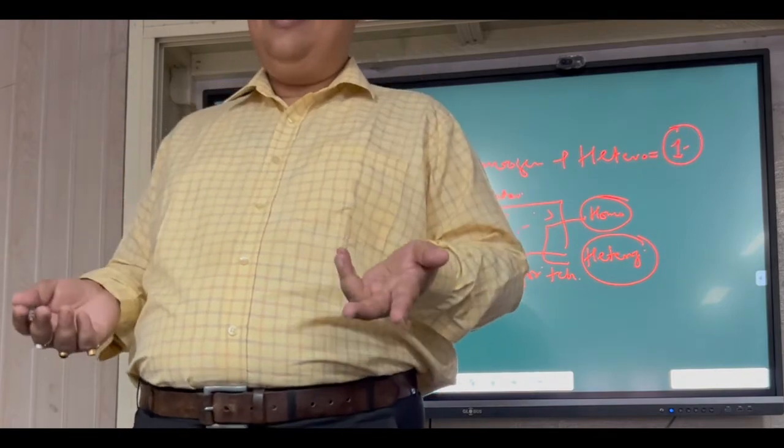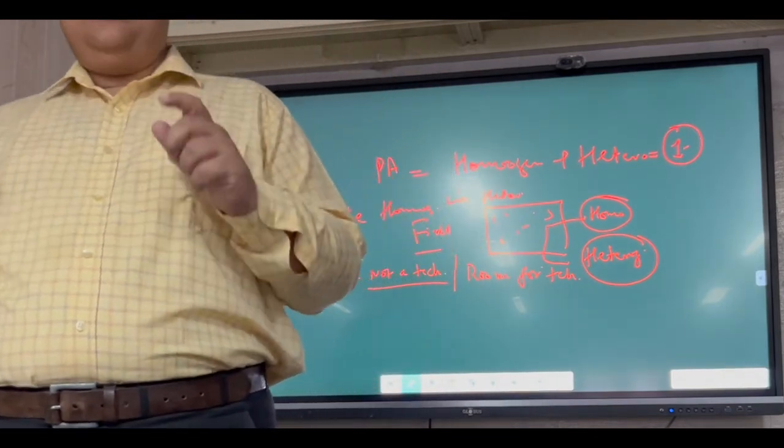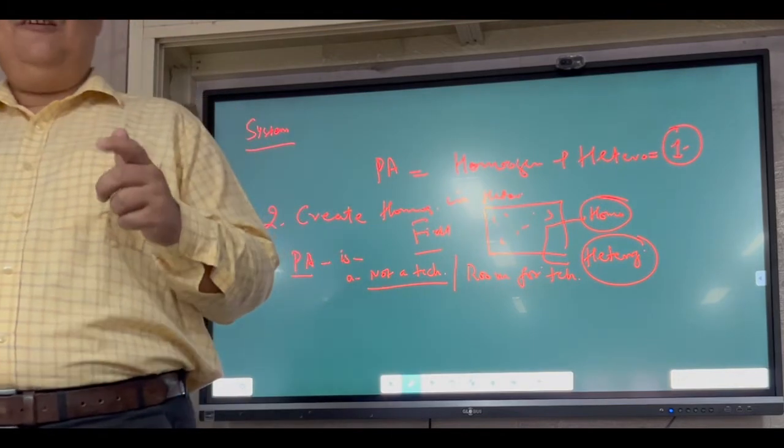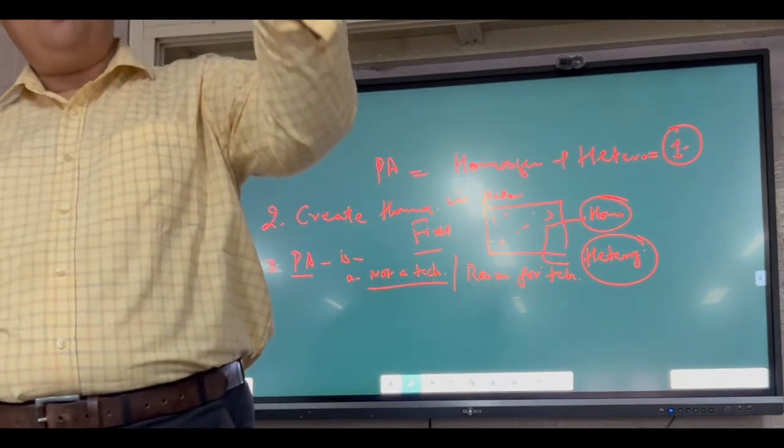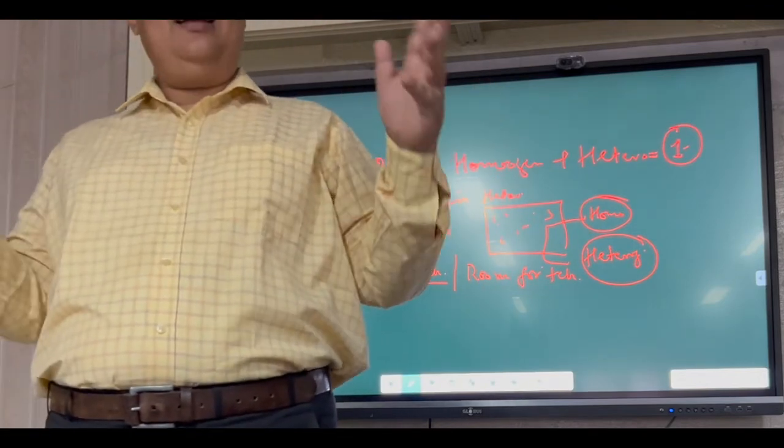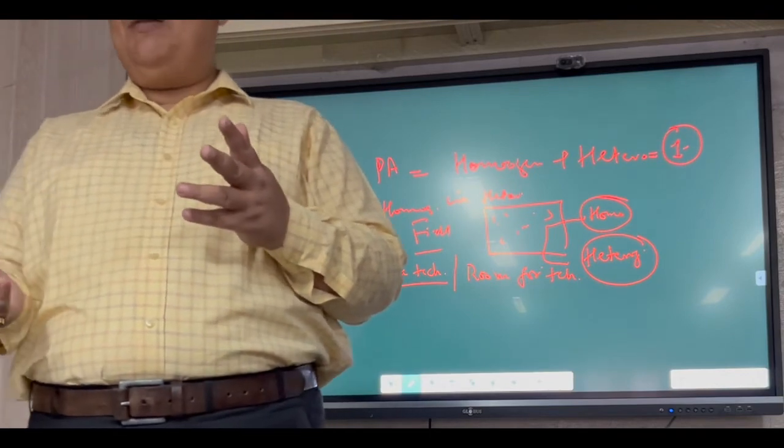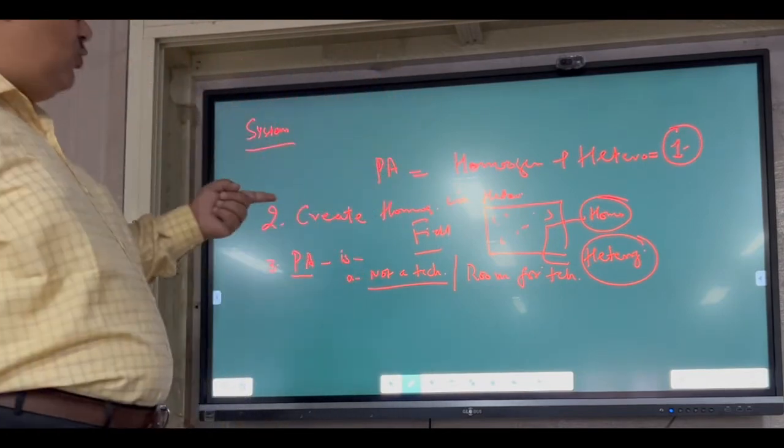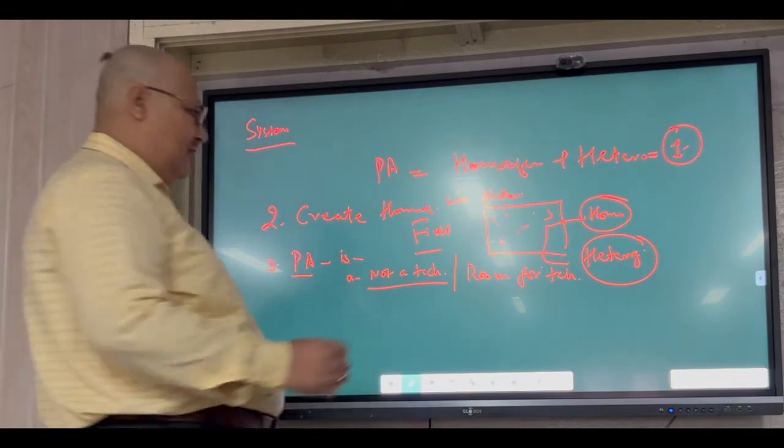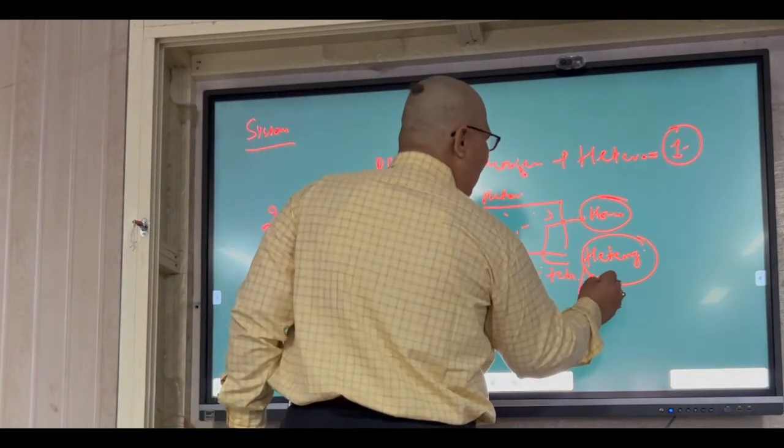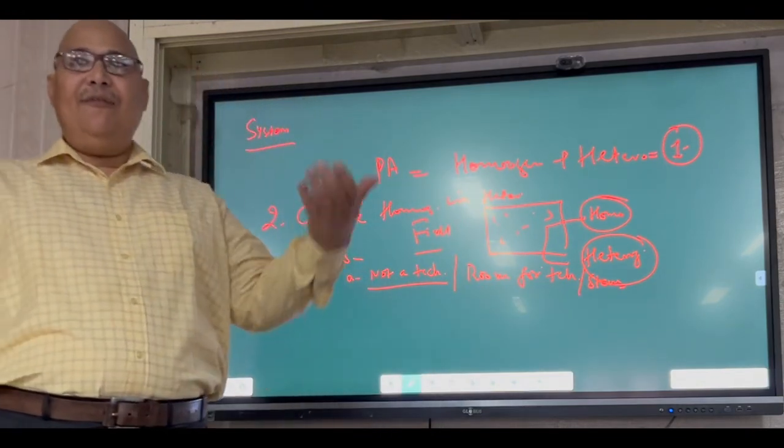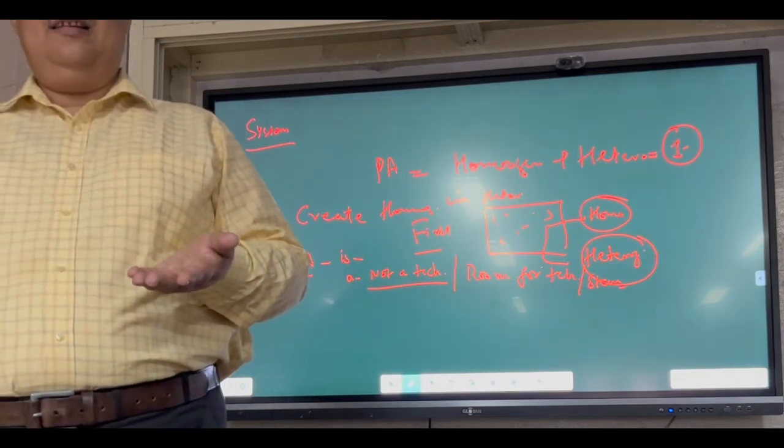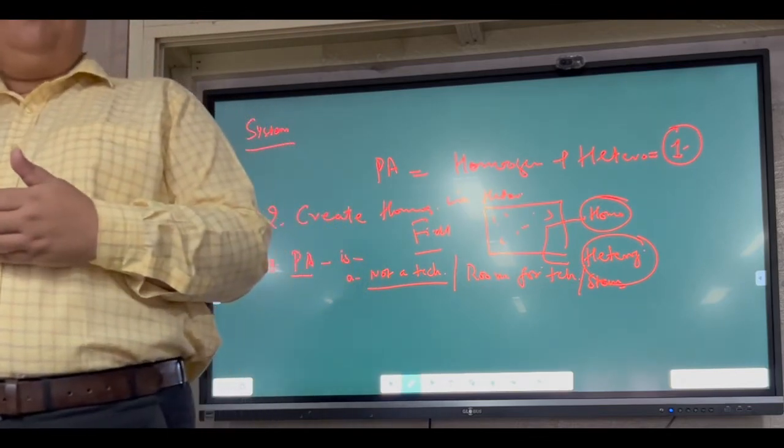System is a component of factors which work independently for common output. It is a system where different kinds of technology operate independently for benefit of common output.